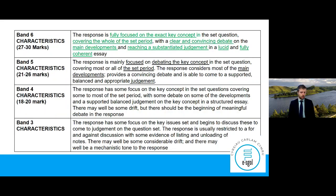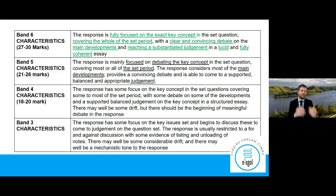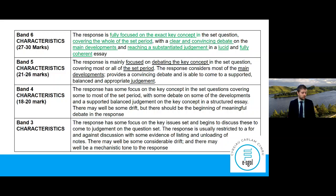Between those steps, we would be able to hit the key points of band six in the mark scheme — and remember band six is top marks, 30 out of 30. Even if you think you'll never get 30 marks, by doing your best to achieve each of those features, you will automatically start to head up through those band characteristics. The more you apply those different ideas, the simpler it will be for you eventually to move up those bands and achieve higher marks.